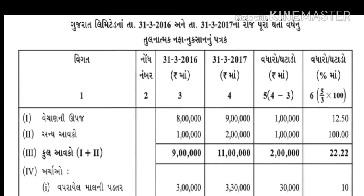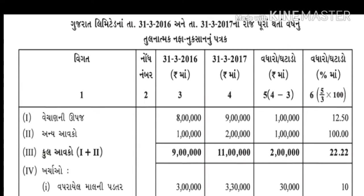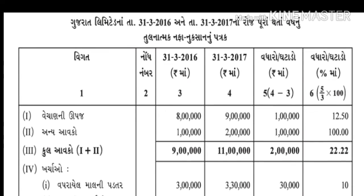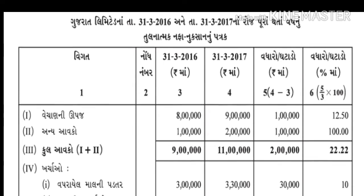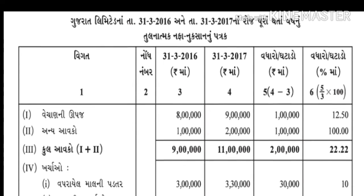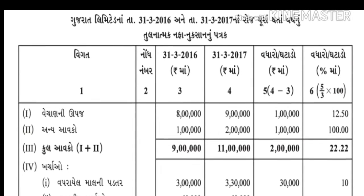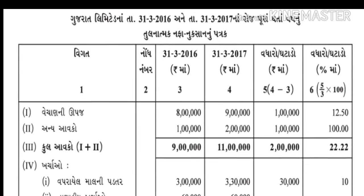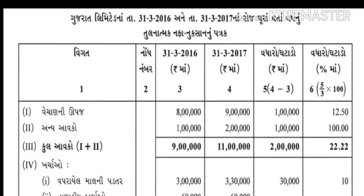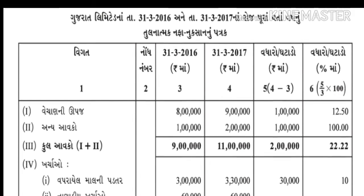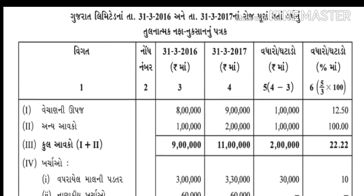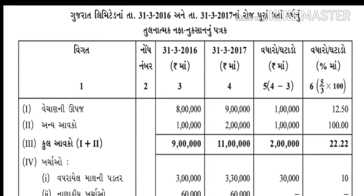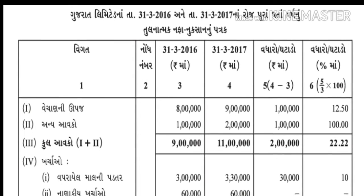જેમાં કહ્યું છે આપણને કે આવકવેરાનો દર 30% હતો. 31/3/2017ના રોજ પૂરા થતા વર્ષનું તુલનાત્મક નફાનુકશાનનું પત્રક. ત્યારબાદ છ ખાનાંમાં - પહેલી વિગત, બીજું ખાનું નોંધ નંબર, ત્રીજું ખાનું ચાલુ વર્ષ, ચોથું ખાનું પાછલા વર્ષની રકમ.